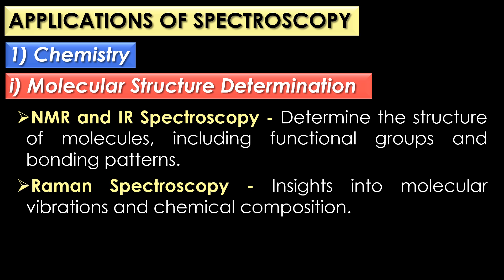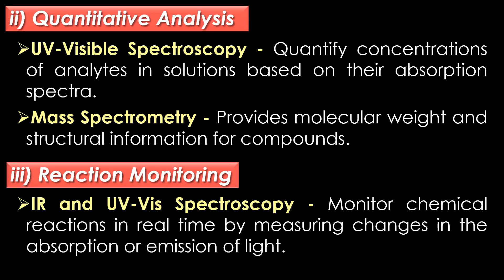Raman spectroscopy provides insights into molecular vibrations and chemical composition. In quantitative analysis, UV-visible spectroscopy is commonly used to quantify the concentration of analytes in solutions based on their absorption spectra. Mass spectrometry provides molecular weight and structural information for compounds.